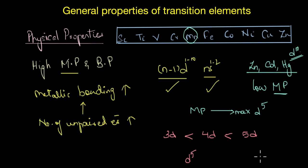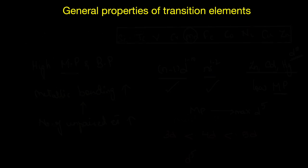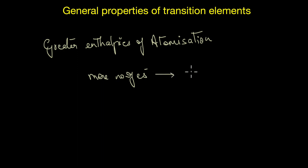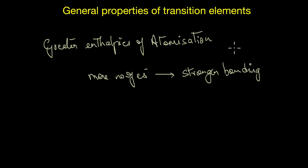Another consequence of more d electrons is greater enthalpies of atomization. As in the case of melting point, more unpaired electrons or valence electrons results in stronger metallic bonding, so the enthalpies of atomization increase. Just as observed with melting point, the second and third series transition metals have greater enthalpies of atomization than the first series — the 5d series has the highest values while the 3d series has the lowest.